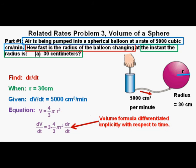Now implicitly differentiating the equation, we get dV/dt equals 3 times 4/3 times π times r squared dr/dt. The 3 out front comes from the r cubed or third power when using the power rule of differentiation.